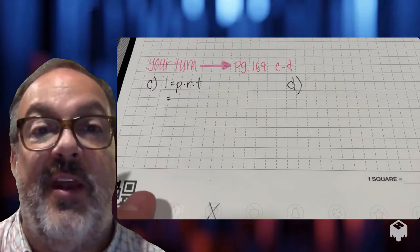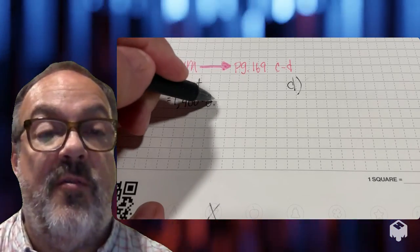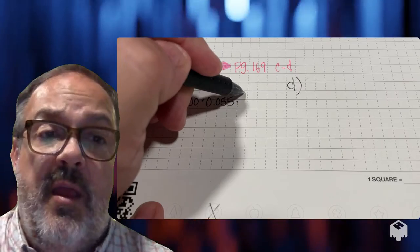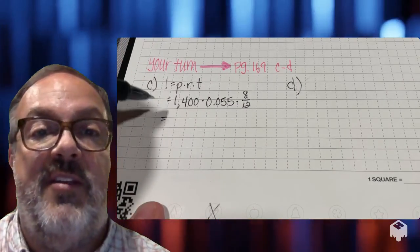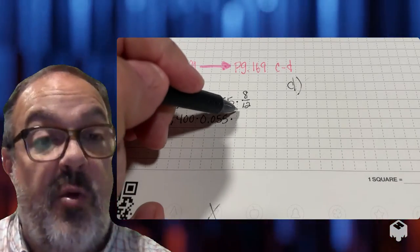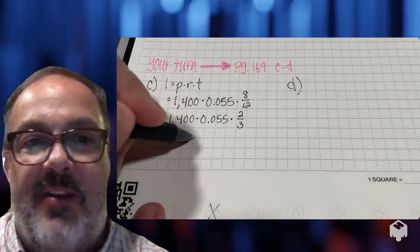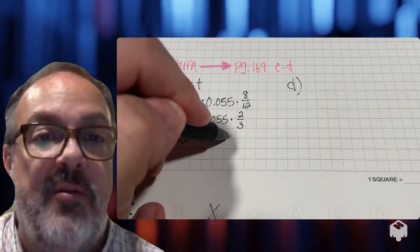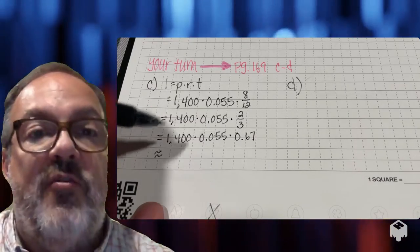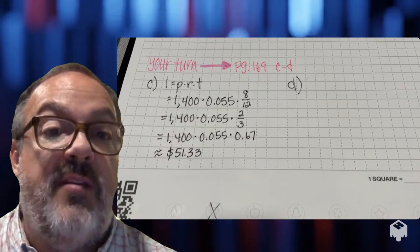By now you should have noticed the pattern — I'm always starting with the simple interest formula. In problem C, I'm going to start out with $1,400 as my principal. My interest rate is 0.055, and the time is 8 months. I can think of that as 8 over 12, which simplifies to two-thirds. Converting two-thirds to a decimal, my interest is going to be an approximation, and at the end of 8 months the interest I'll have to pay is $51.33.